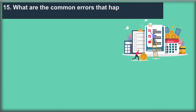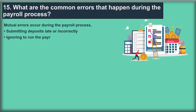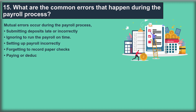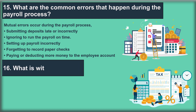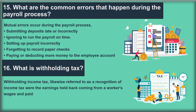Question 15: What are the common errors that happen during the payroll process? Common errors during the payroll process include: submitting deposits late or incorrectly, ignoring to run the payroll on time, setting up payroll incorrectly, forgetting to record paper checks, and paying or deducting more money to or from the employee account. Question 16: What is withholding tax? Withholding income tax, also referred to as retention income tax, is the earnings held back from a worker's wages and paid directly to the government by the employer.